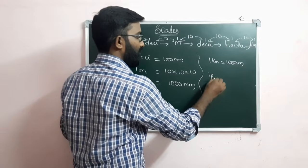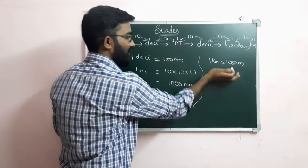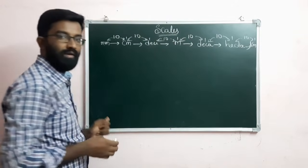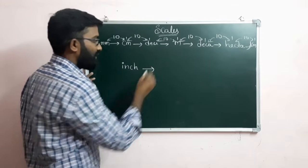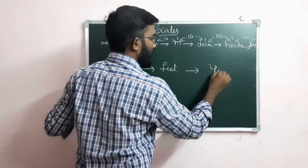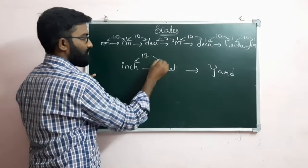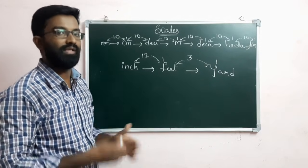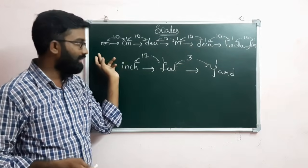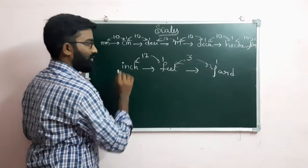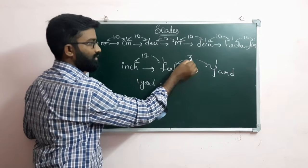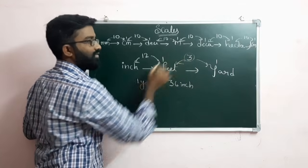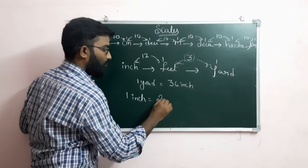Now for the imperial system — yard, feet, inches. 12 inches equals 1 foot. 3 feet equals 1 yard. So 1 yard equals 3 into 12 which is 36 inches. 1 yard equals 3 feet. For conversion to metric: 1 inch equals 2.54 cm. So 1 yard equals 36 into 2.54 cm.